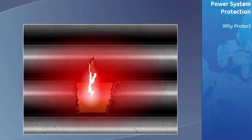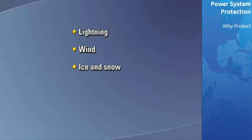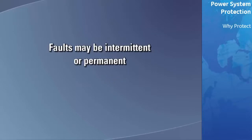There are many causes of power system faults: lightning, wind, and ice and snow, just to mention a few. The protective system must be able to sense the fault and take appropriate action within a time frame necessary to minimize damage. Faults may be intermittent or permanent in nature.